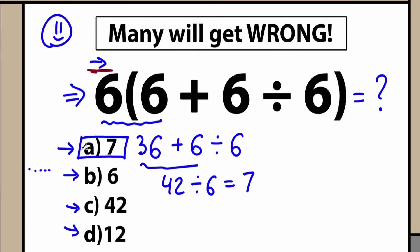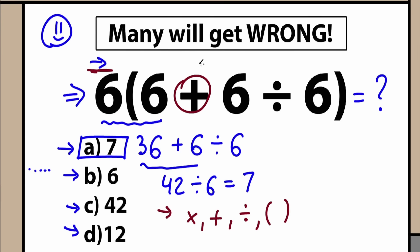What makes all the difference is the order we do this problem. In this question we have multiplication, addition, division, and parentheses. In math it's really important to know how to order these mathematical operators, because we can't just solve the question from left to right. Starting with addition gives one answer, starting with division gives a completely different answer. We need to know the correct order.